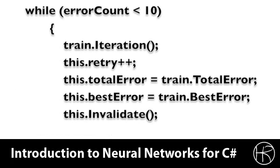We are going to loop until we have an error count of 10. What an error count of 10 really means is that we have had 10 iterations where the training has not sufficiently improved the neural network.